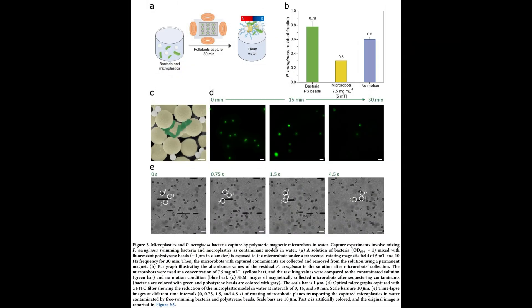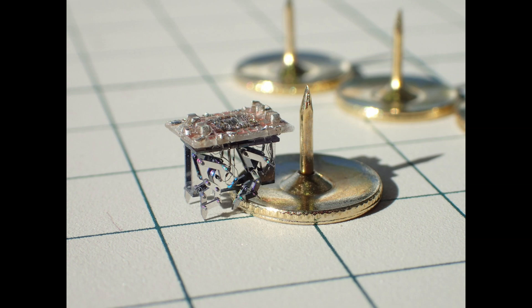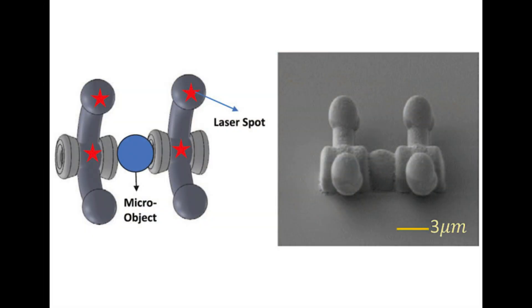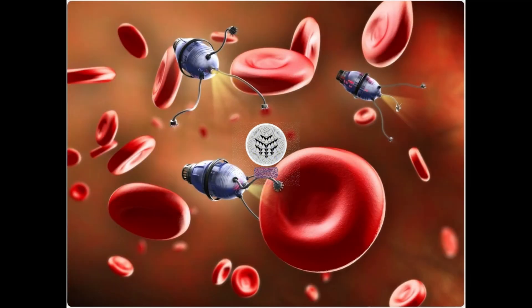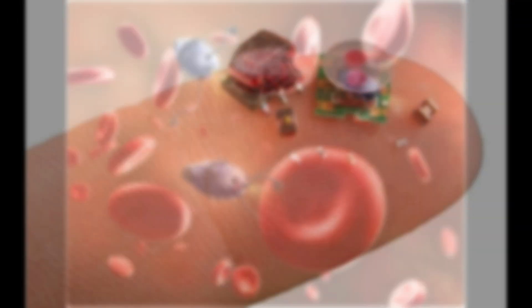In a recent study published in ACS Nano, scientists have unveiled an innovative solution in the form of swarms of micro-robots. These remarkable micro-robots have the ability to capture both microplastics and bacteria from water, subsequently undergoing decontamination and reuse.